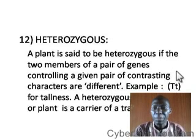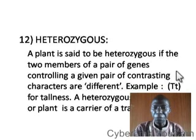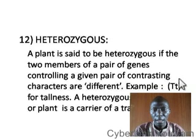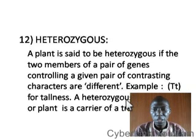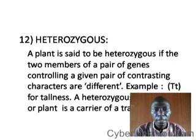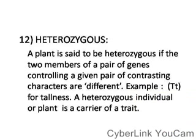A plant is said to be heterozygous if the two members of the gene controlling a given pair of contrasting characters are different. The alleles — capital T and small t — are different, so they are heterozygous. The tallness character is a carrier of the shortness trait, meaning the plant appears tall but is also carrying the allele for shortness, which can be expressed in future generations.